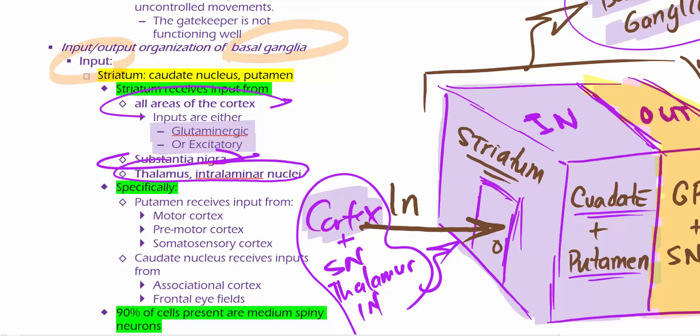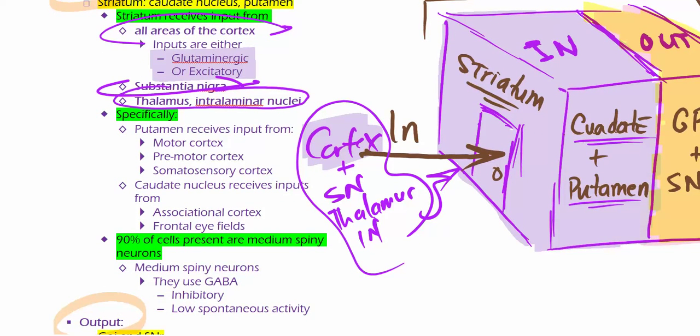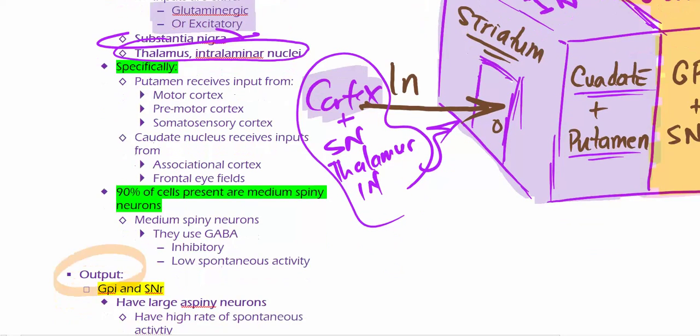So the striatum was what? What was the striatum? Inhibitory, GABA. That's right. So then from the cortex, from the cortex would be what, Carl? Excitatory. Exactly.